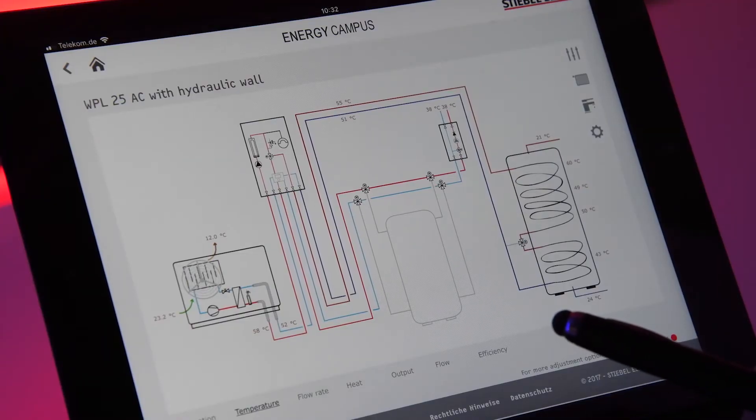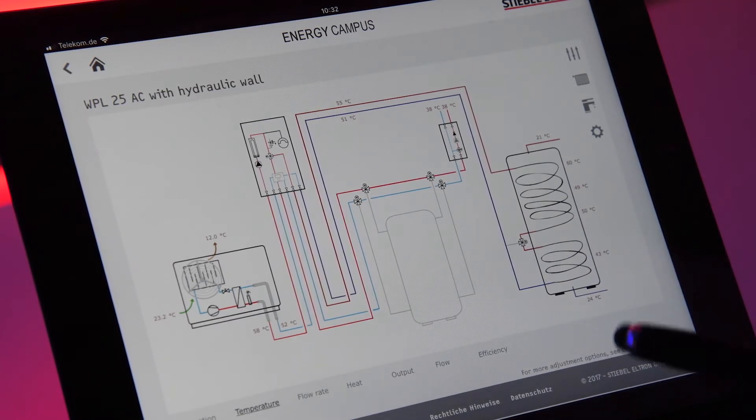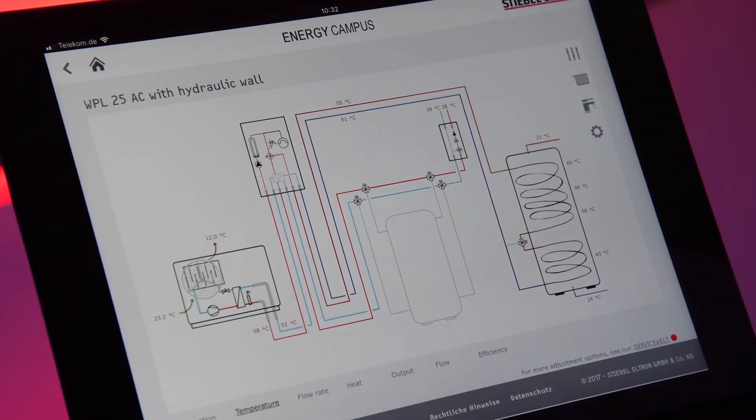And here we have now a heat pump running with a small capacity, 6 to 7 kilowatts, and you see here the flow and the return temperature from the heat pump has a delta T of 6 Kelvin at the moment.